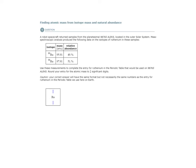So this topic is finding atomic mass from isotope mass and natural abundance. Here's our problem. We have this robot spacecraft that has returned samples from space and these samples were analyzed via mass spectroscopy and they produce this data here in this table on the isotopes of ruthenium in these samples.